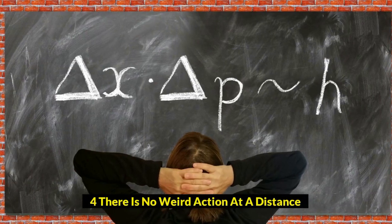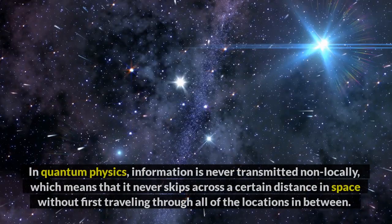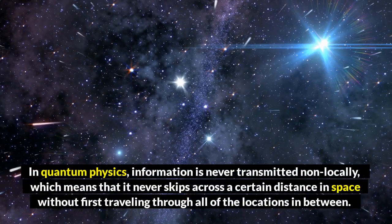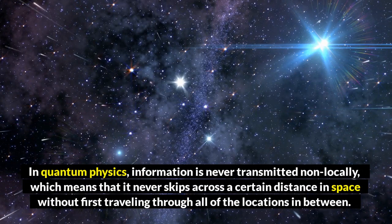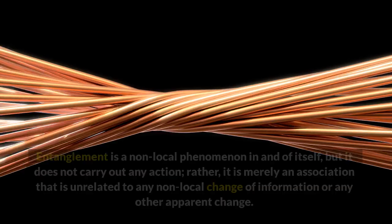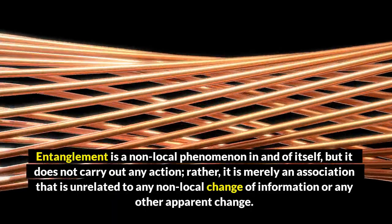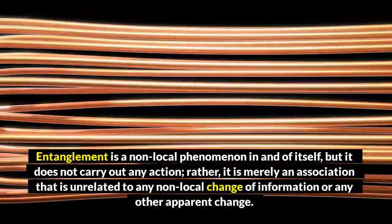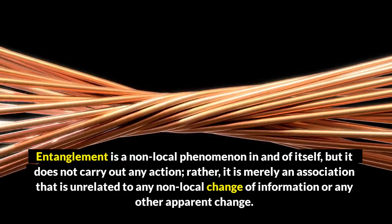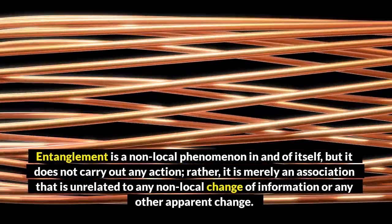4. There is no weird action at a distance. In quantum physics, information is never transmitted non-locally, which means that it never skips across a certain distance in space without first traveling through all of the locations in between. Entanglement is a non-local phenomenon in and of itself, but it does not carry out any action. Rather, it is merely an association that is unrelated to any non-local change of information or any other apparent change.